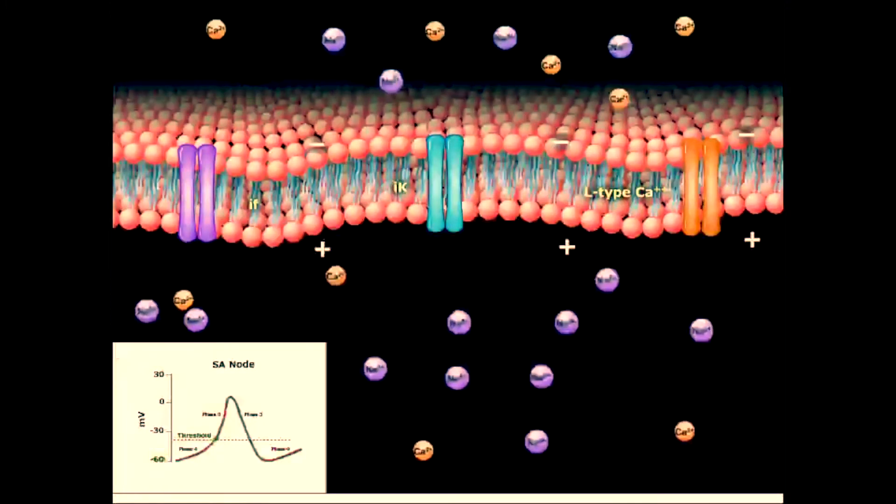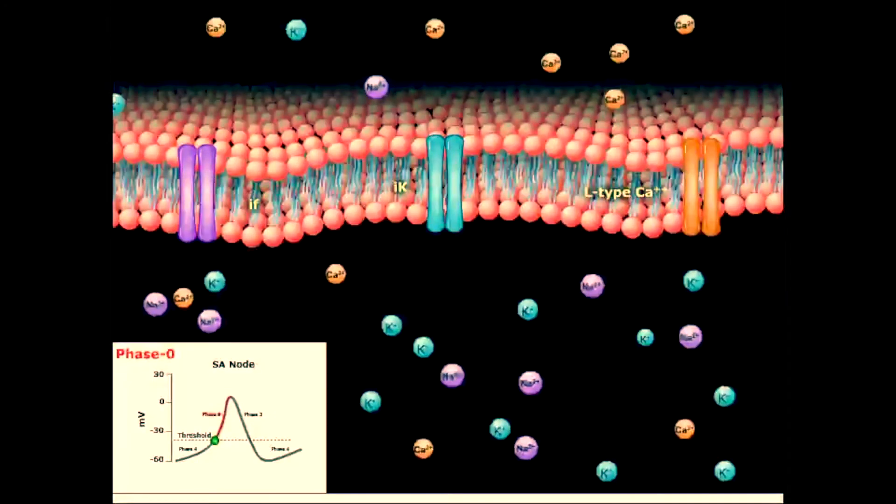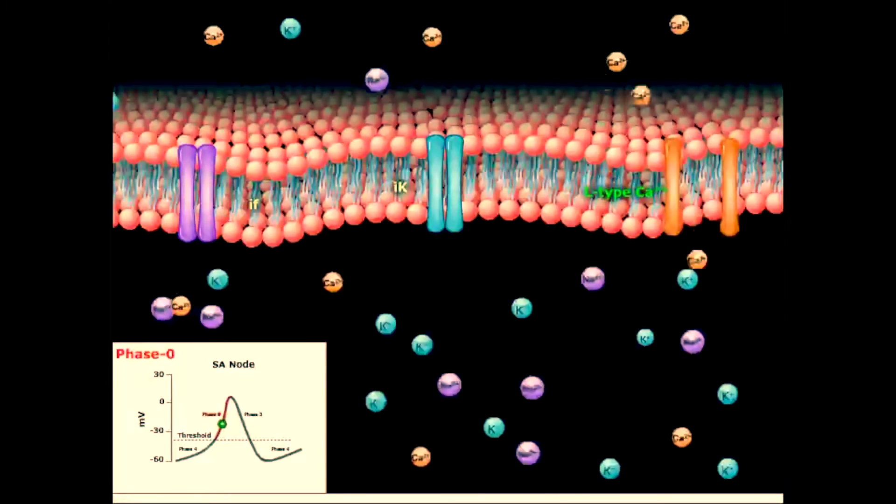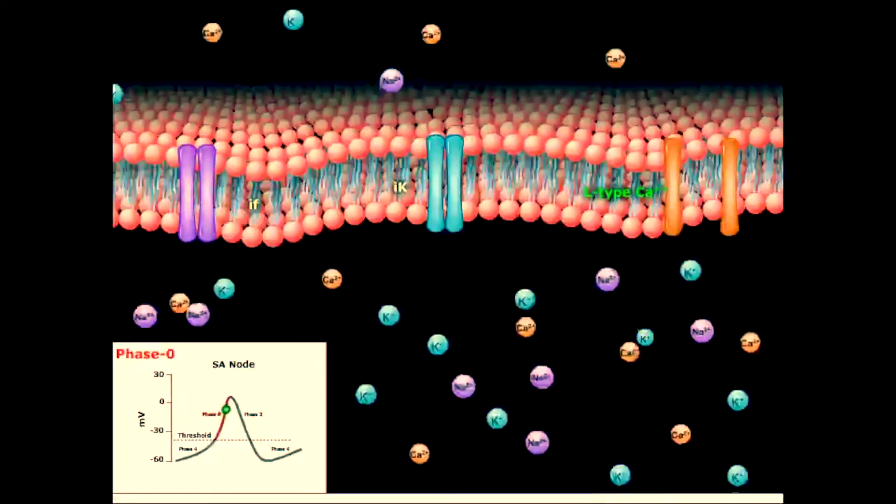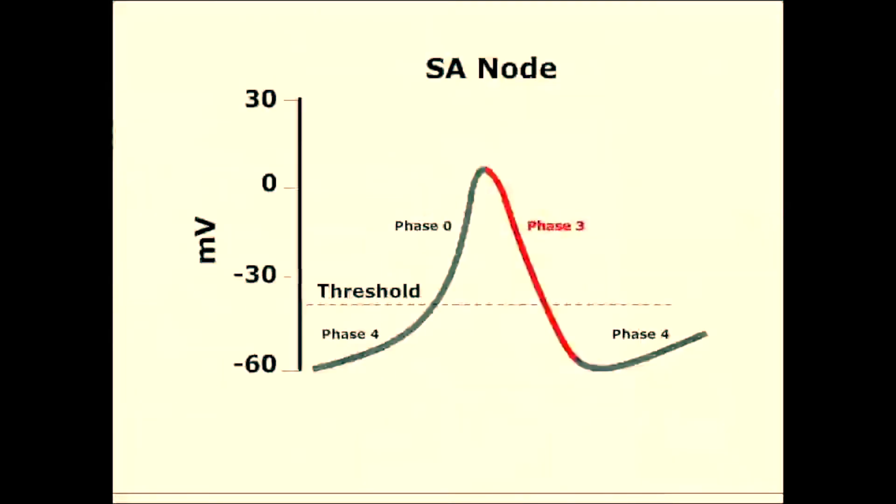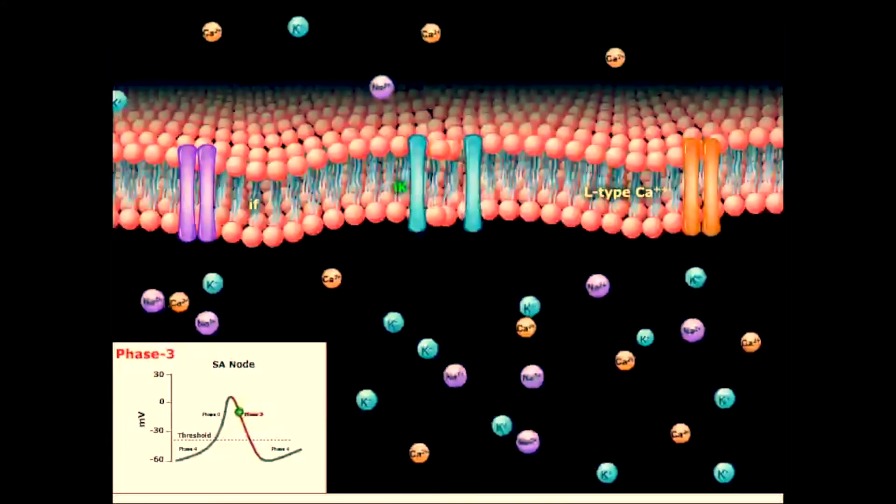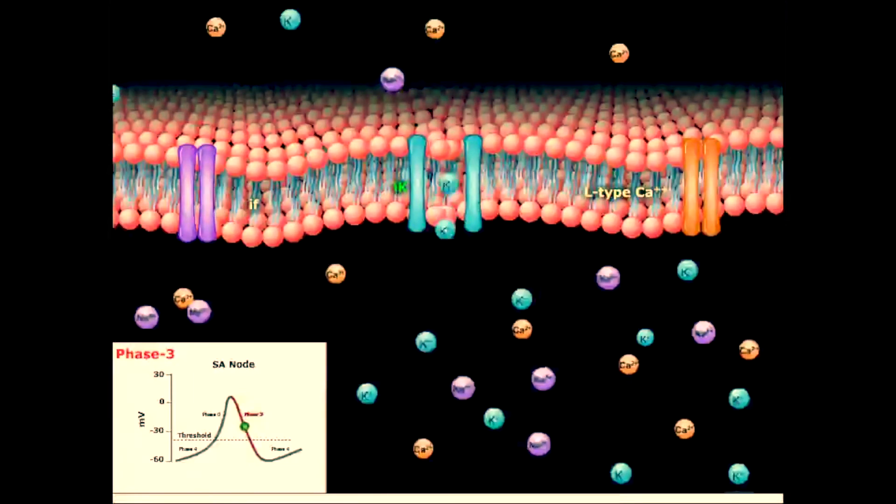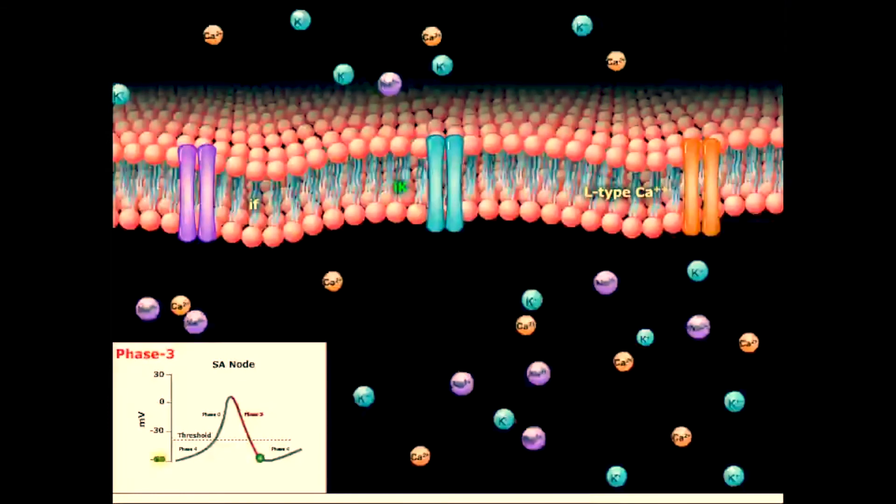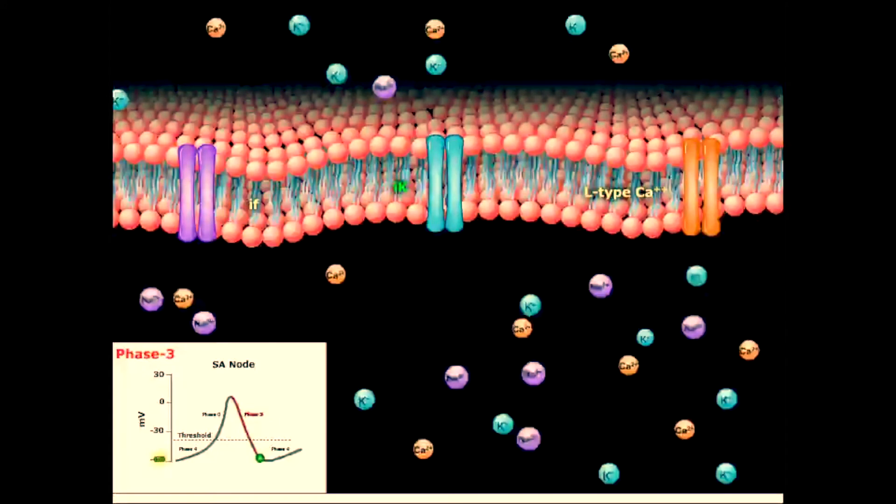Let's proceed to the next phase. Phase 0 is the depolarization phase of the action potential. It is caused by a net influx of calcium via the L-type calcium channels. This is followed by repolarization within phase 3. During this phase, a rapid efflux of potassium occurs via delayed rectifying potassium channels, IK. Once the cell is completely repolarized at about minus 60 millivolts, as seen on the graph, the cycle repeats spontaneously.